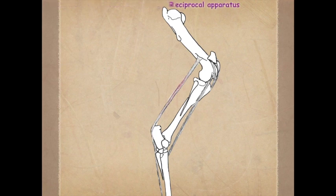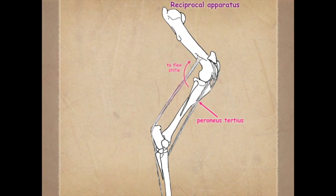Peroneus tertius in the horse, unlike the bovine, is a fibrous band going from the extensor fossa down to the third metatarsal bone, as well as the fourth tarsal bone. Because it is a fibrous band, in order to flex the stifle, we need to first flex the hock.